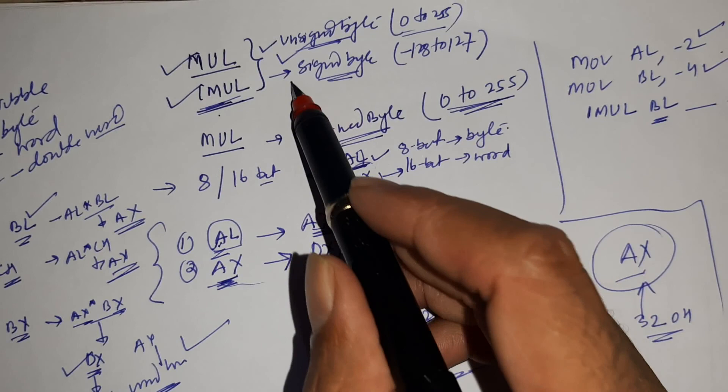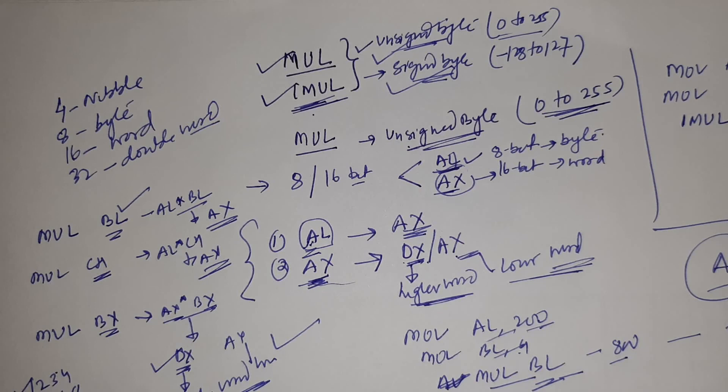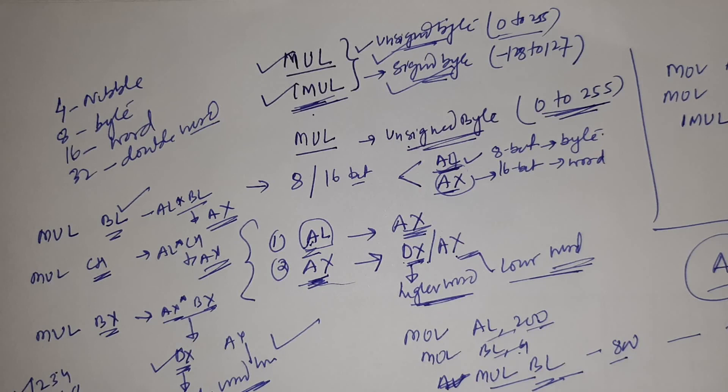So this is the working of MUL and IMUL — MUL is used for unsigned bytes and IMUL is used for signed bytes. In 8085 microprocessor there is no instruction for multiplication, but in 8086 we have these two instructions. I hope you understand how multiplication works in the 8086 microprocessor. Thank you for watching.